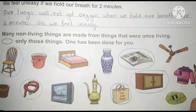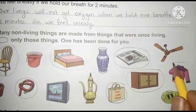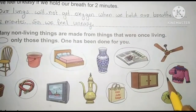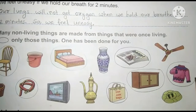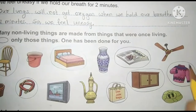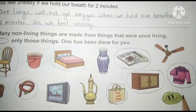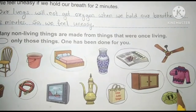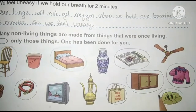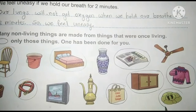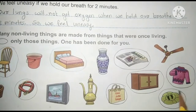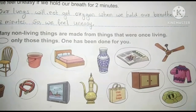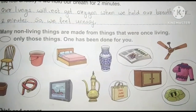This bag is made from jute plant. This sweater is made from wool; we get wool from the hair of sheep. Mat is made from cloth or rubber; we get rubber and cloth from living things.